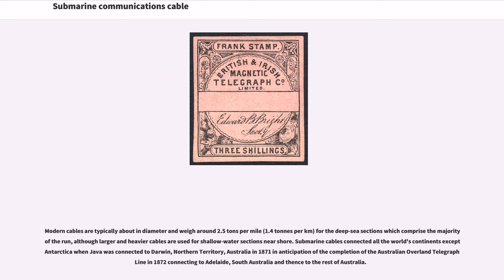Submarine cables connected all the world's continents except Antarctica when Java was connected to Darwin, Northern Territory, Australia in 1871, in anticipation of the completion of the Australian Overland Telegraph Line in 1872 connecting to Adelaide, South Australia.